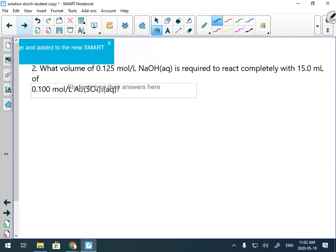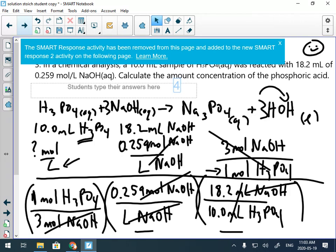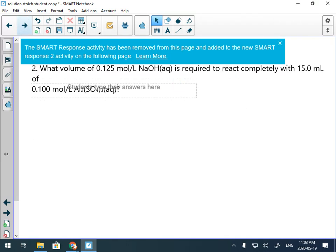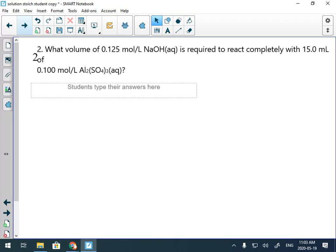One more practice question. This one says what volume of 0.125 mole per liter sodium hydroxide is required to react completely with 15 milliliters of 0.1 mole per liter. Okay, this is kind of hard to see here, so let's just move this. Okay, you guys can read this. All right, write the reaction.